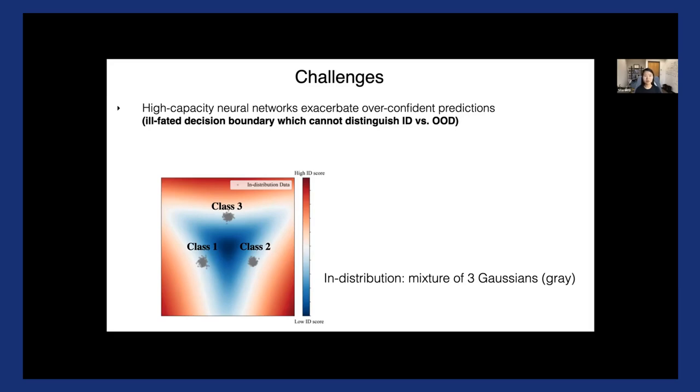And so therefore, this is a model. This is the case where a model is perfectly fine for classification, but it cannot reliably tell apart ID versus OOD.